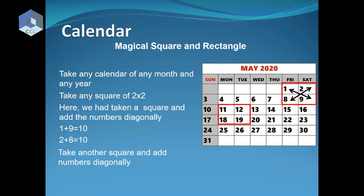Any matrix, any square number: 3 plus 11 plus 19 is 33. And 17 plus 11 plus 5 is also 33.